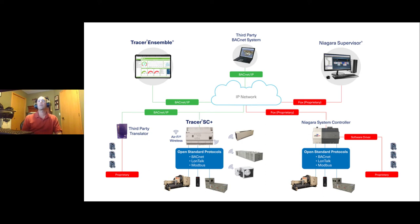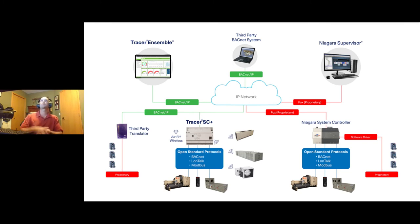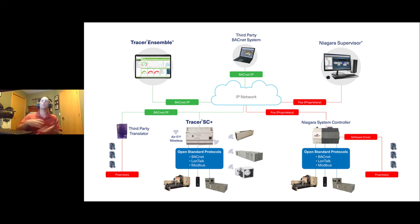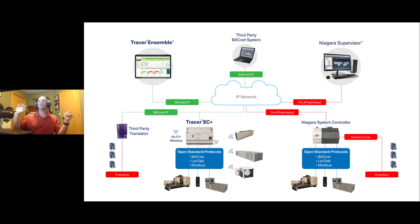By comparison, using a third-party translator device and making sure it translates proprietary communications and exports all data as BACnet over IP, you don't even necessarily need a Trane Tracer SC Plus system level controller — that's part of the point of building open systems. By ensuring it only speaks BACnet over IP out of the top, you can use many different supervisory controllers or pieces of software — Trane's Tracer Ensemble, any third-party BACnet system or tool, even Niagara Supervisor — all communicating through that translator just as expected from an open system.